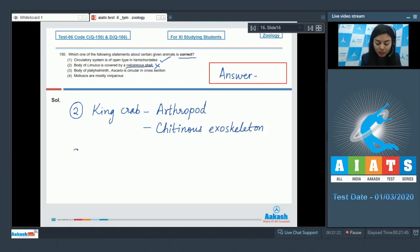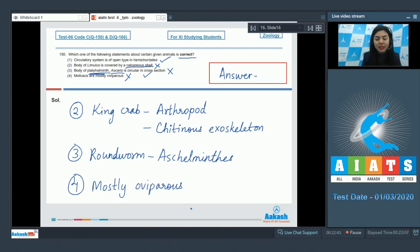Option three: body of platyhelminth Ascaris is circular in cross section. Ascaris is a roundworm and comes under the phylum Aschelminthes. It's not a platyhelminth, so this becomes incorrect. Yes, it is circular in cross section, but the phylum is incorrect. Option four: molluscs are mostly viviparous. This is incorrect. Molluscs are mostly oviparous. They are dioecious and undergo indirect development. The correct answer here is option number one.